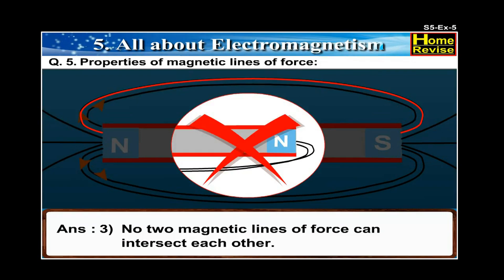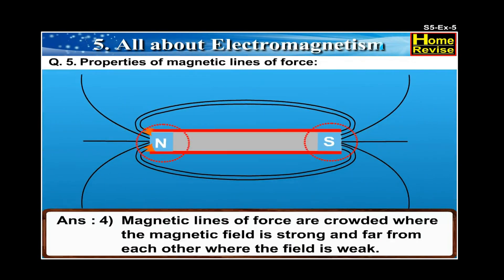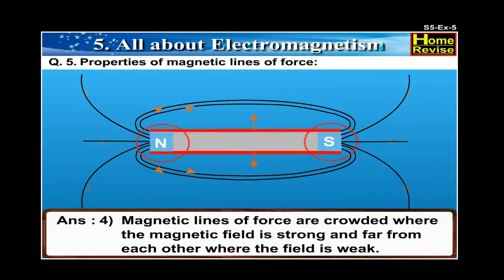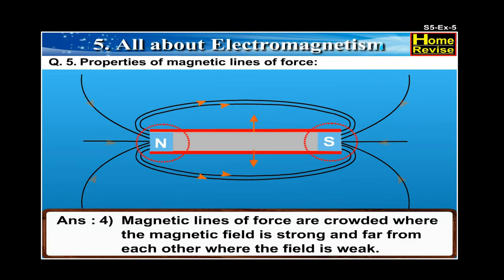4. Magnetic lines of force are crowded where the magnetic field is strong, and far from each other where the field is weak.